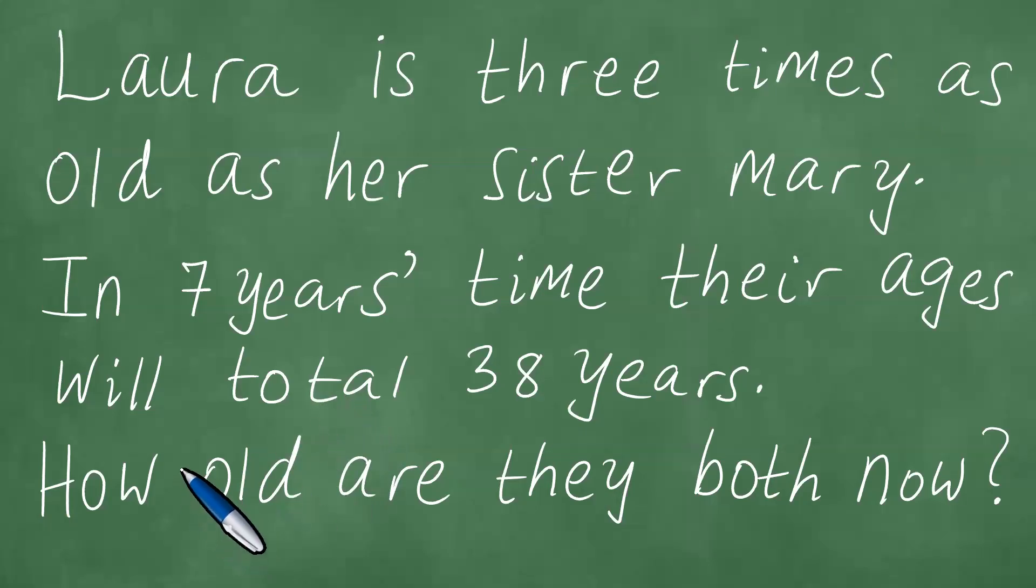We have this word problem in front of us, and it's a very exciting word problem. Laura is three times as old as her sister Mary. In seven years' time, their ages will total 38 years.